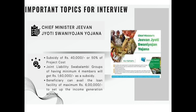Next is the Chief Minister Jivan Jyoti Swanujan Yojana, under which a person will get a subsidy of ₹40,000 to ₹50,000 of the project cost. This is an employment generation scheme through entrepreneurship. This scheme is also applicable for Swavalambi groups (SSGs) — cooperative societies or groups — which must have a minimum of four members and can receive a subsidy of up to ₹1,60,000. Beneficiaries can also avail bank loans up to a maximum amount under this scheme.